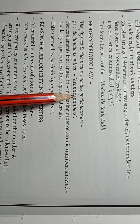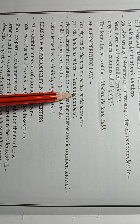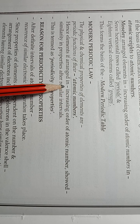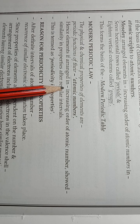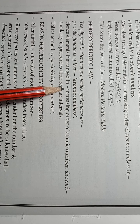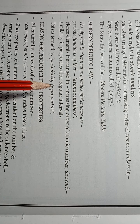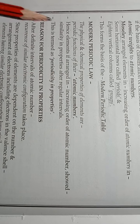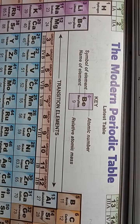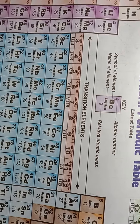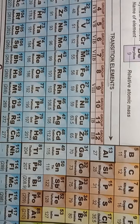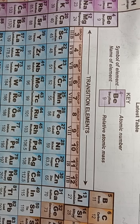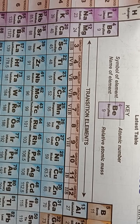The modern periodic law added new dimensions to the periodic classification of elements. Based on the modern periodic law, several new periodic tables have been proposed. Among these, the long form or extended form of the periodic table is found to be the most useful. The picture of the long form of the periodic table is given in your book. This periodic table has a number of important properties.